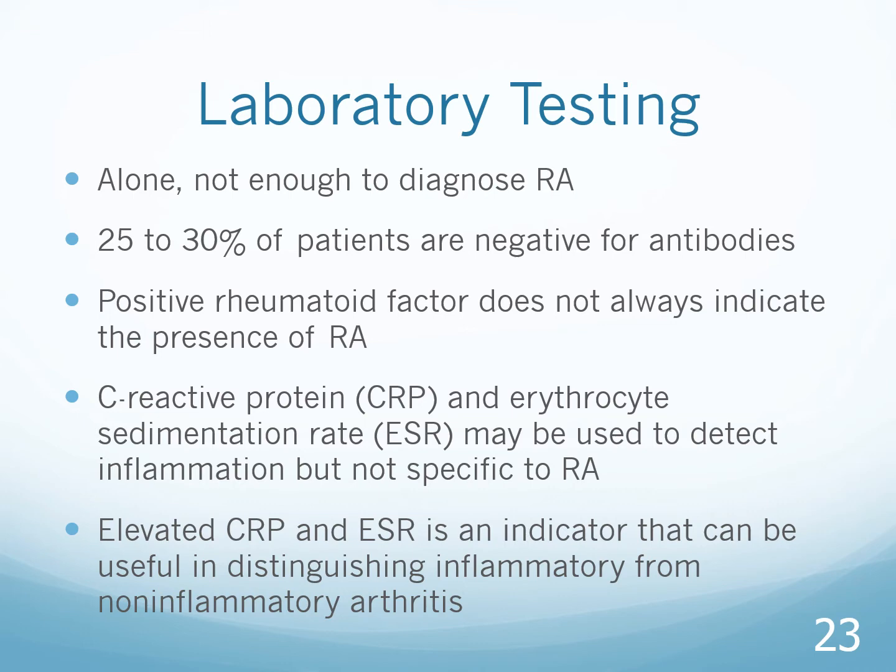A positive rheumatoid factor does not always indicate the presence of RA. C-reactive protein (CRP) and erythrocyte sedimentation rate (ESR) may be used to detect inflammation, but are not specific to RA. In the hospital setting, when you suspect an inflammatory process, these are the two lab studies you will look at. An elevated CRP and ESR is an indicator useful in distinguishing inflammatory from non-inflammatory arthritis.